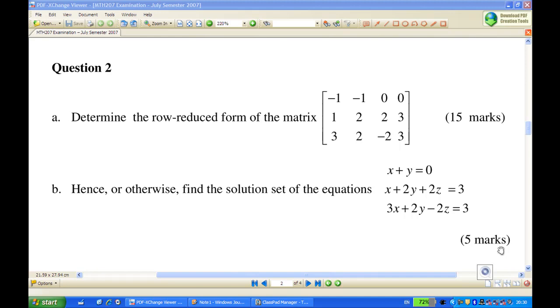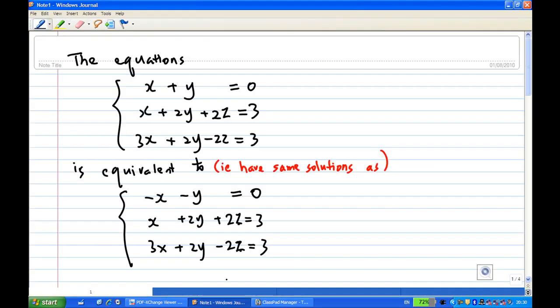In fact, this solution actually follows from part 2a to find the row-reduced form of the matrix. Let's examine the equations again. You'll find that the given equations are equivalent to, or have the same solution as: negative x minus y equals 0, x plus 2y plus 2z equals 3, 3x plus 2y minus 2z equals 3.